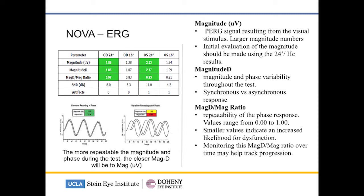These are all from the steady-state pattern ERG rather than the transient PERG. On the bottom left you can see a normal patient with good magnitude and also excellent phase variability — very little phase variability — so the different waveforms are basically superimposable. Just to the right of that, you can see a good magnitude response but they're out of phase, and that is because there is some dysfunction of the retinal ganglion cells, so they don't overlay well.